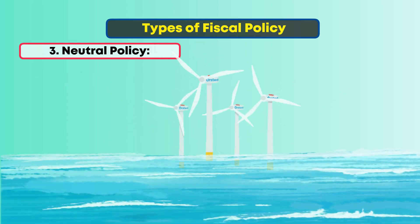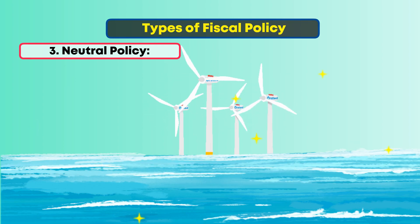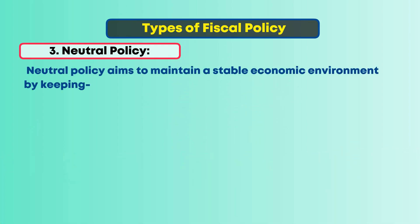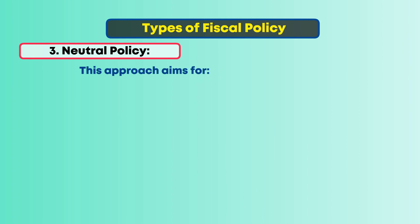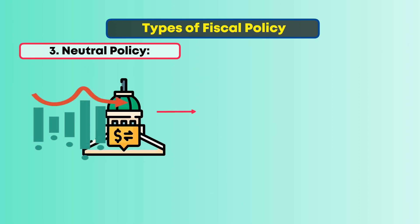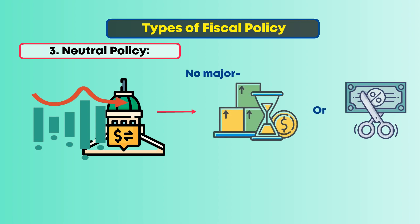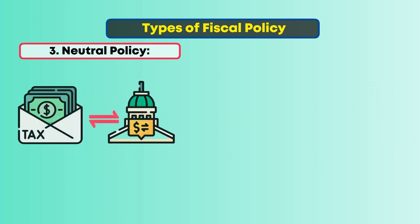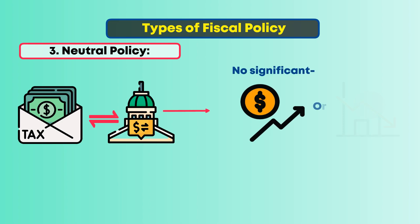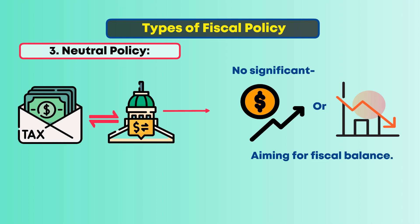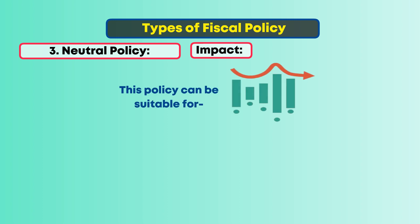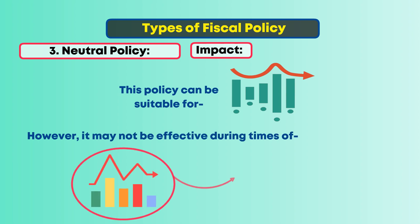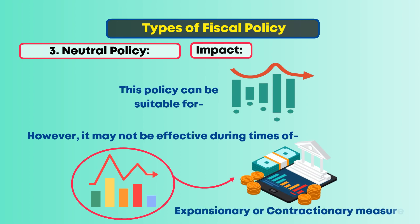Third, Neutral Policy. Imagine steady winds and calm seas. Neutral policy aims to maintain a stable economic environment by keeping government spending and taxes at a level that roughly balances the budget. This means maintaining a constant level of government spending with no major increases or cuts, and setting taxes to cover government spending with no significant surpluses or deficits. This policy suits periods of moderate economic growth and stable prices, but may not be effective during times of significant economic fluctuations requiring expansionary or contractionary measures.